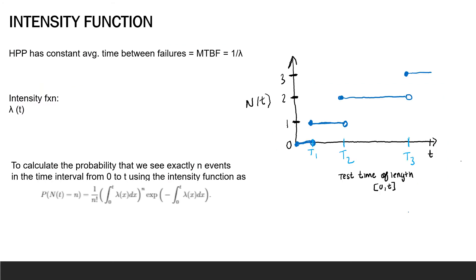So in the last module, we were talking about the HPP, the homogeneous Poisson process, where we have a constant describing the average time between failures. And we call this MTBF, mean time between failures. And we said that this is equal to the expected value of the exponential distribution, one over lambda. So one over lambda is this constant average time between failures.